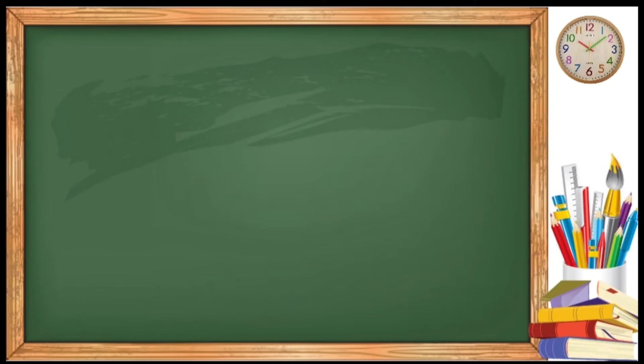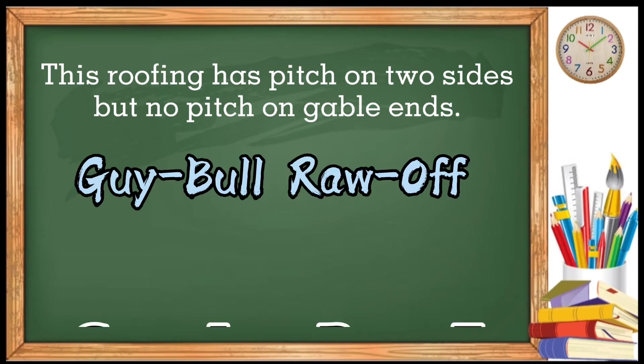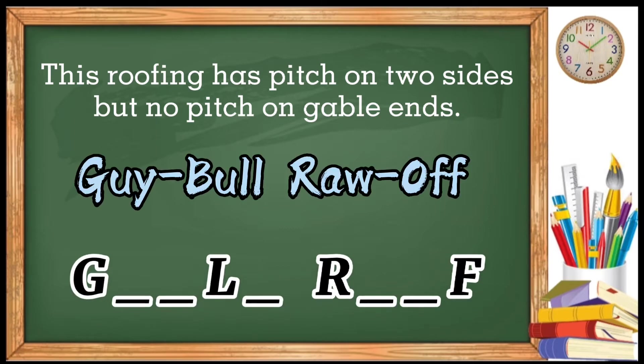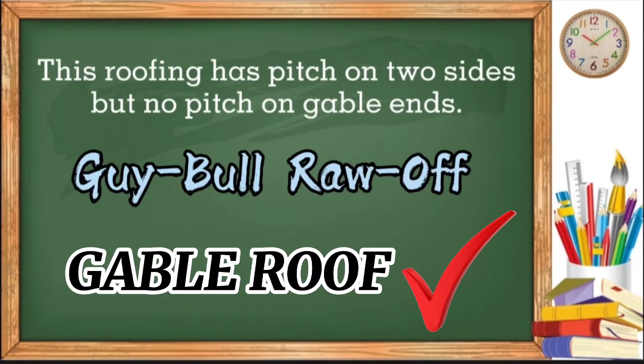Now, it's your turn. Identify this statement and follow the directions. This roofing has pitch on two sides but no pitch on gable ends. Here's the clue. Guy, bull, row, off. Guy, bull, row, off. The answer is gable roof. Very good.